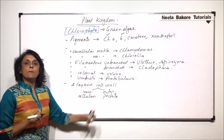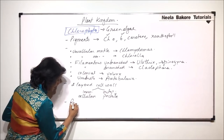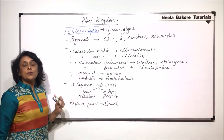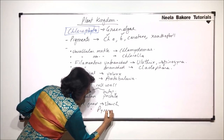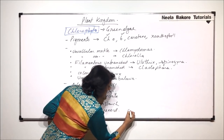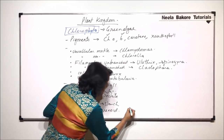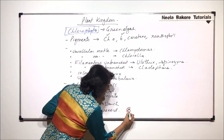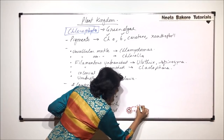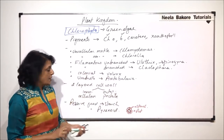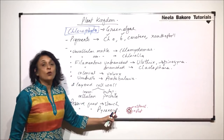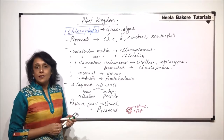The reserve food is starch, but there is one more structure found called the pyrenoid. These pyrenoids are embedded in chloroplasts, and each pyrenoid has a core of protein surrounded by starch grains. This gives it a flower-like appearance where the central part is protein and the peripheral part is starch granules. The pyrenoid is a reserve material that remains embedded in the chloroplasts, where chlorophyll is also present.